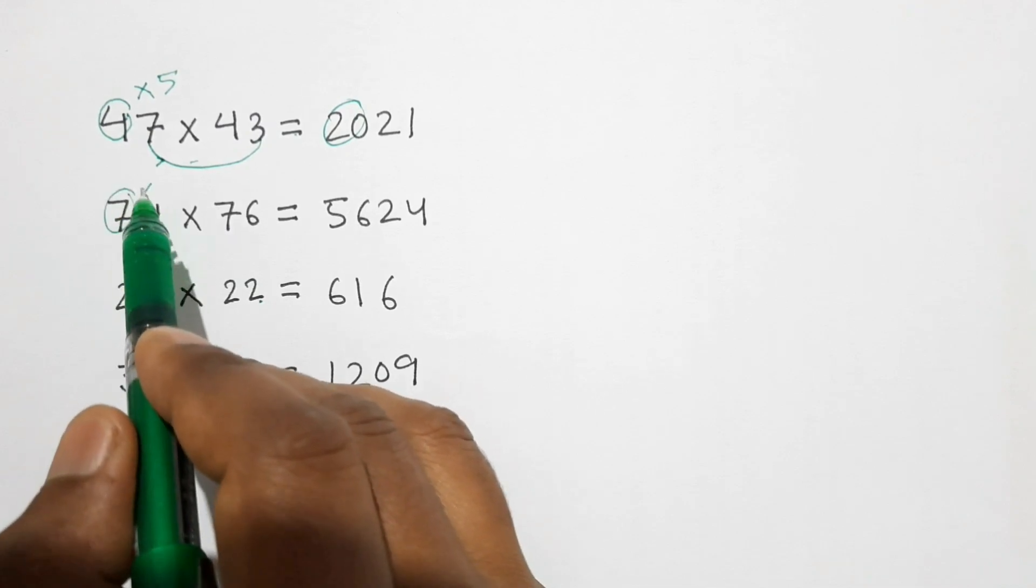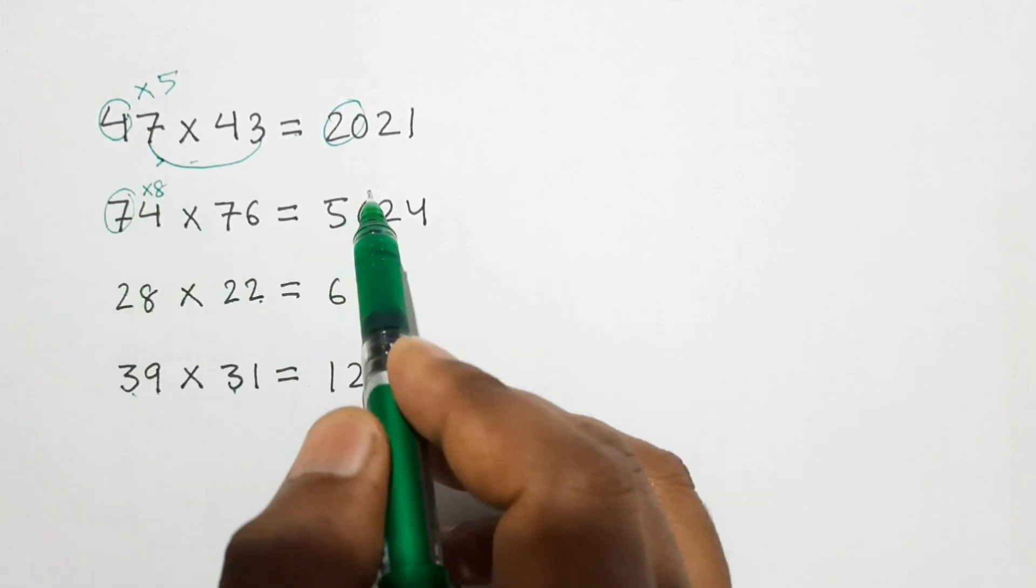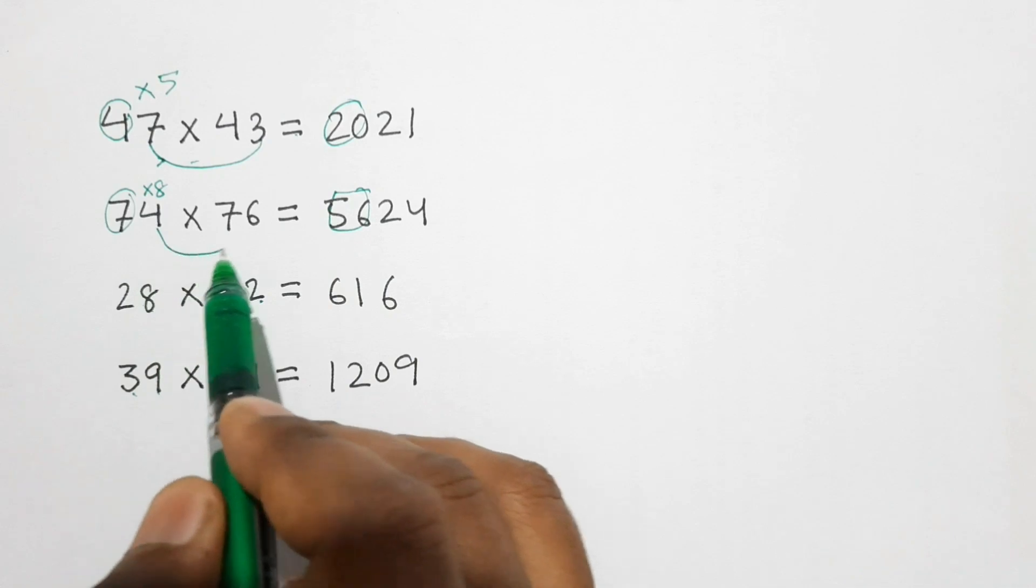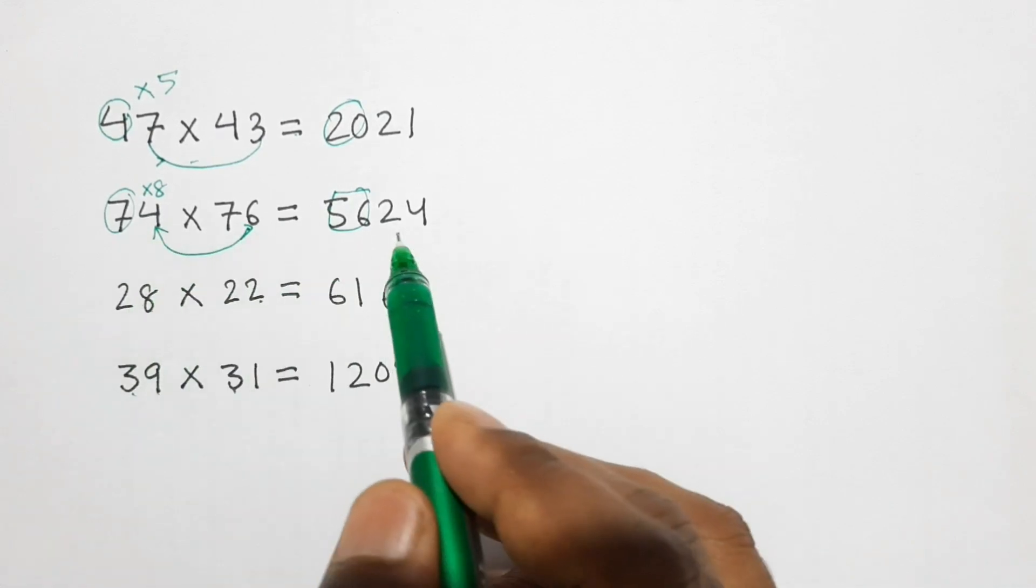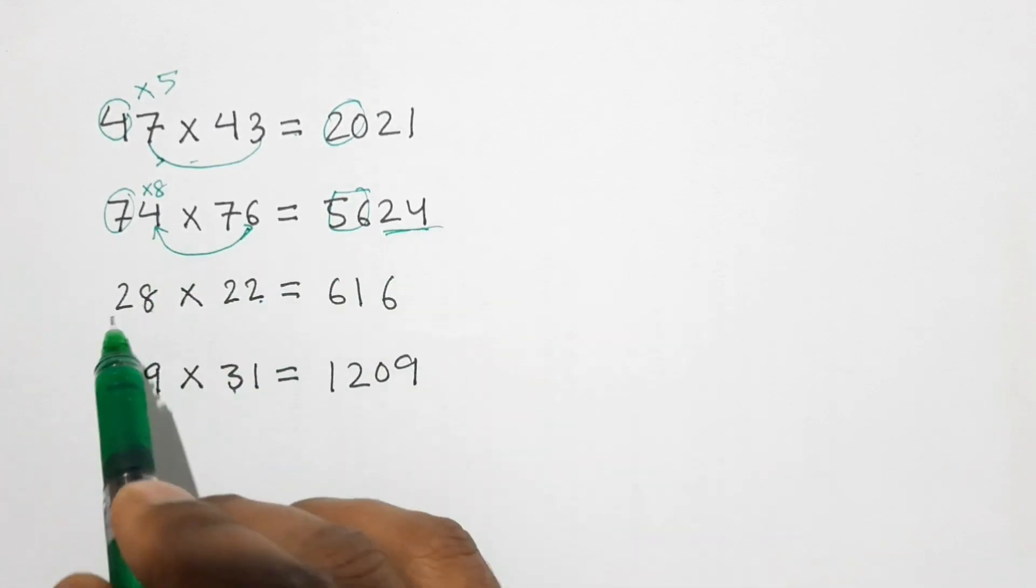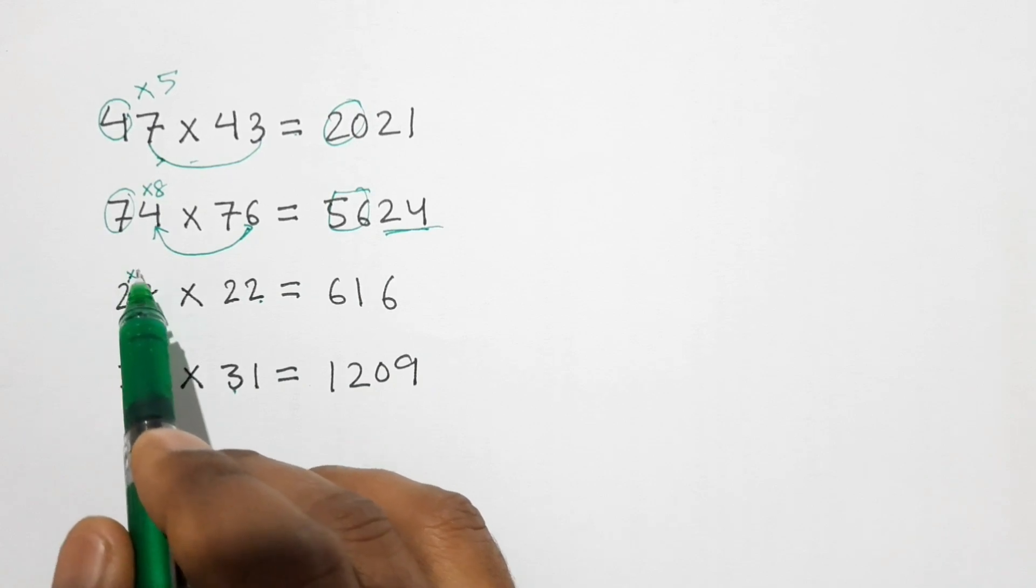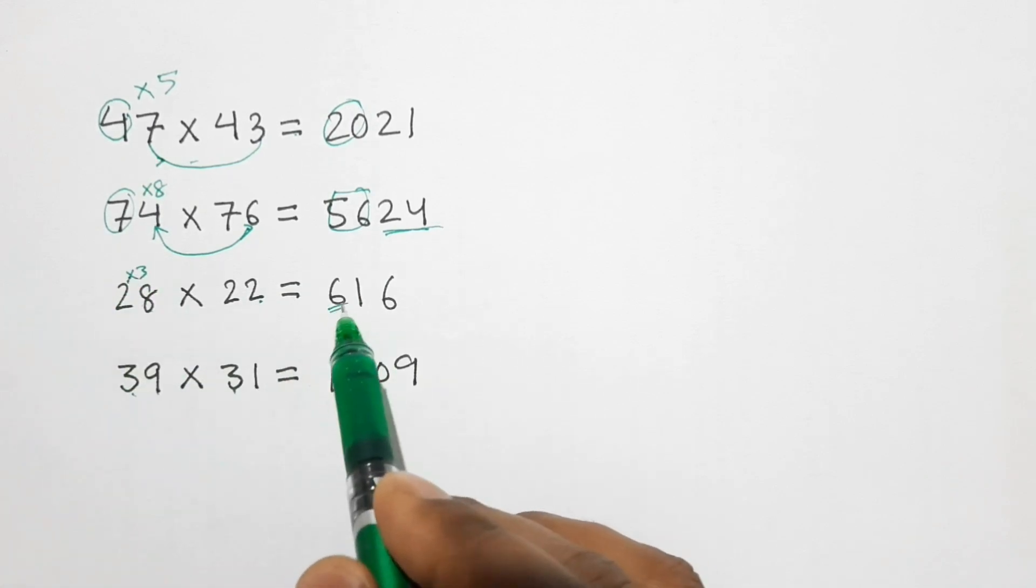Similarly here also 7 into 8, 7 times 8 is 56, and 4 into 6 is 24. Here also 2 into 3, 2 times 3 is 6, and 2 times 8 is 16.